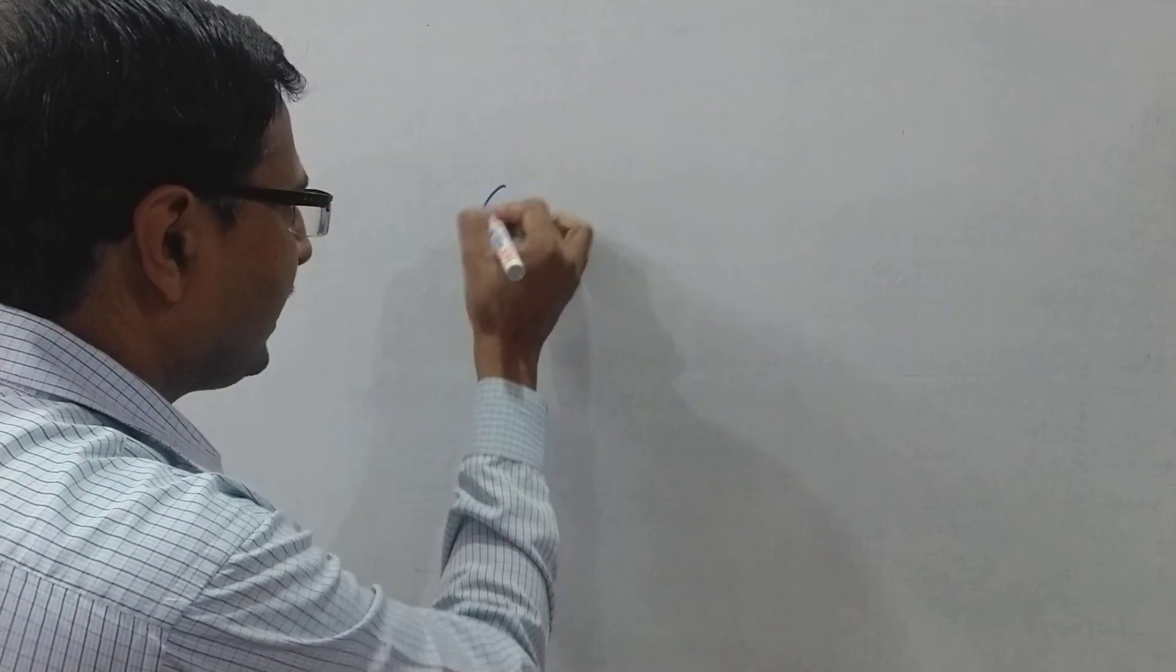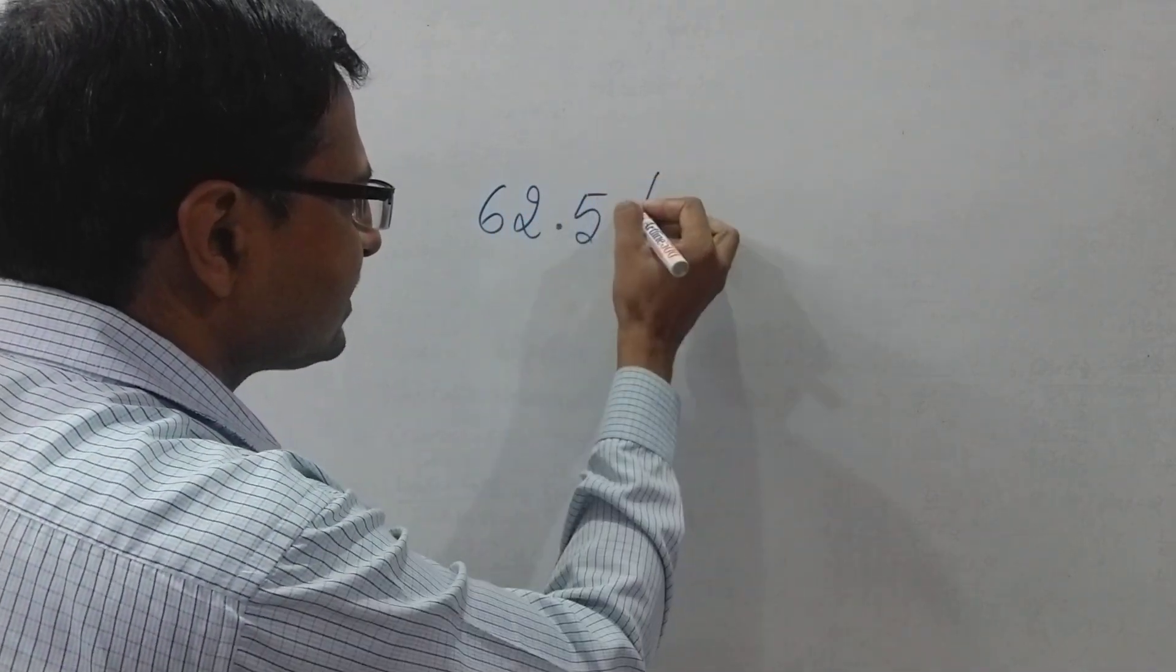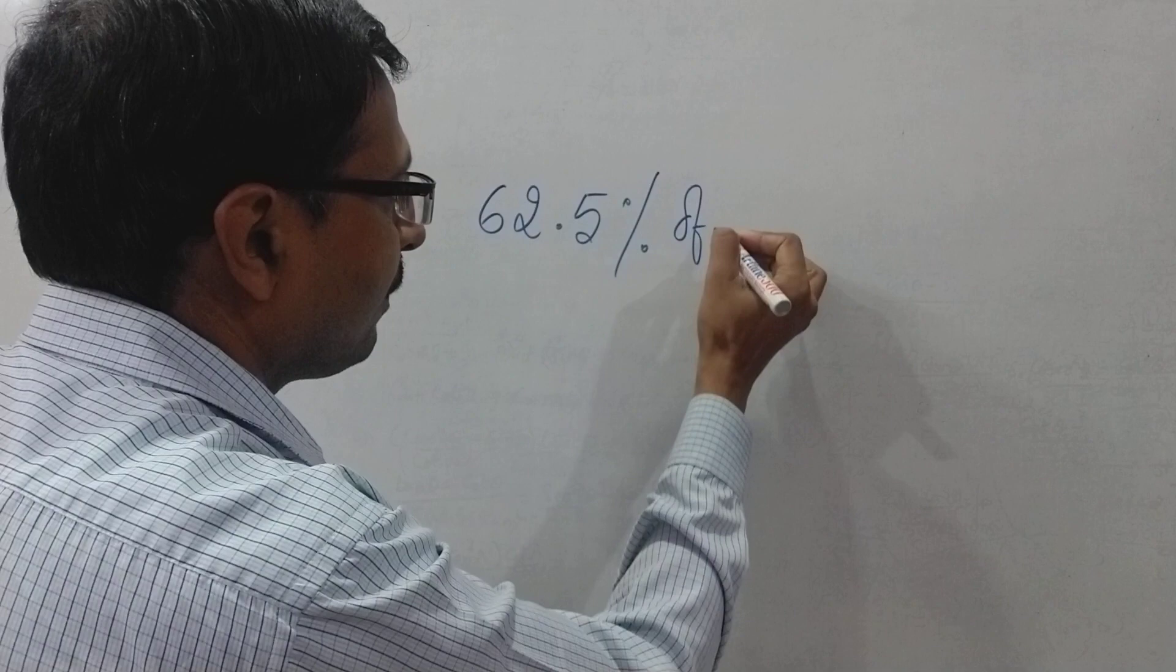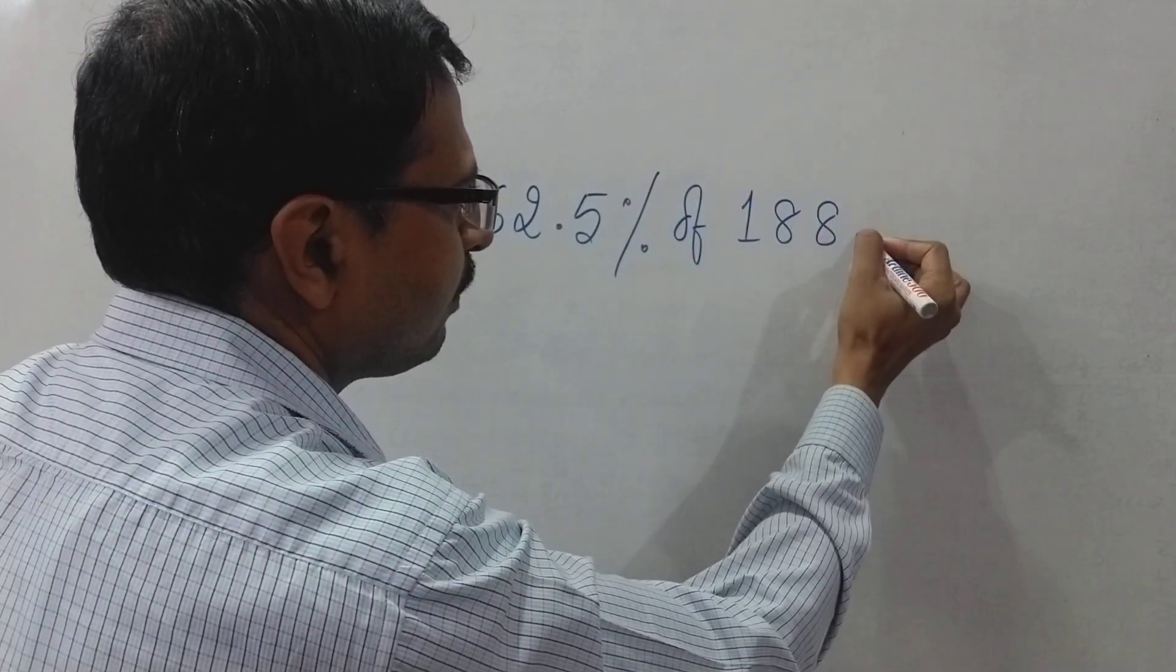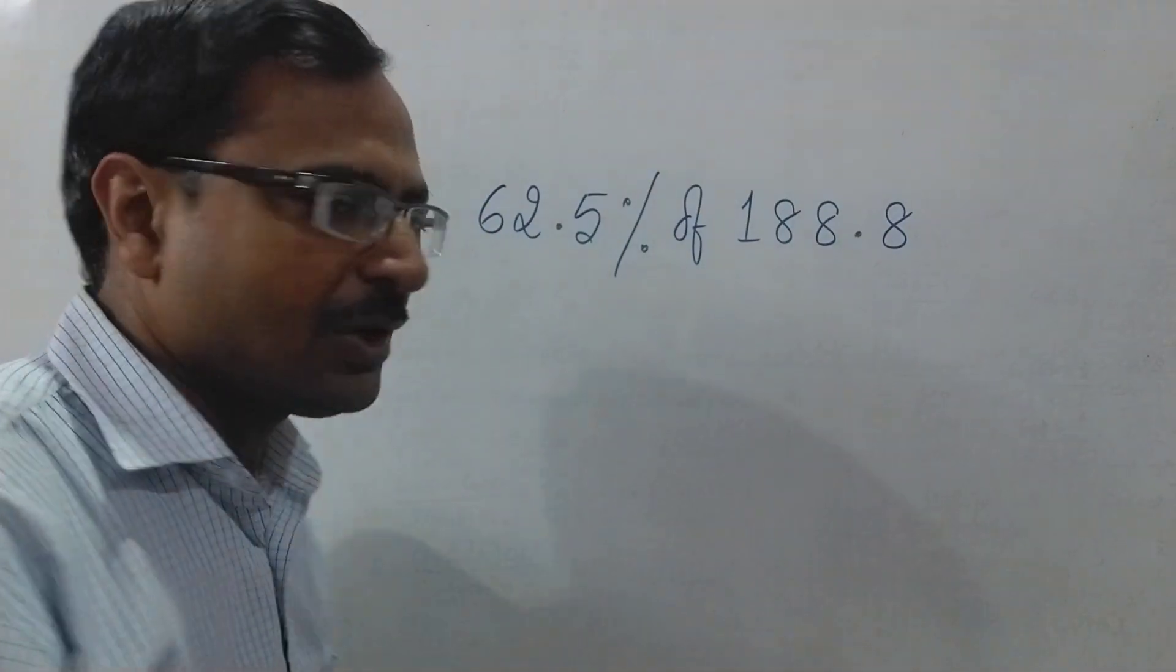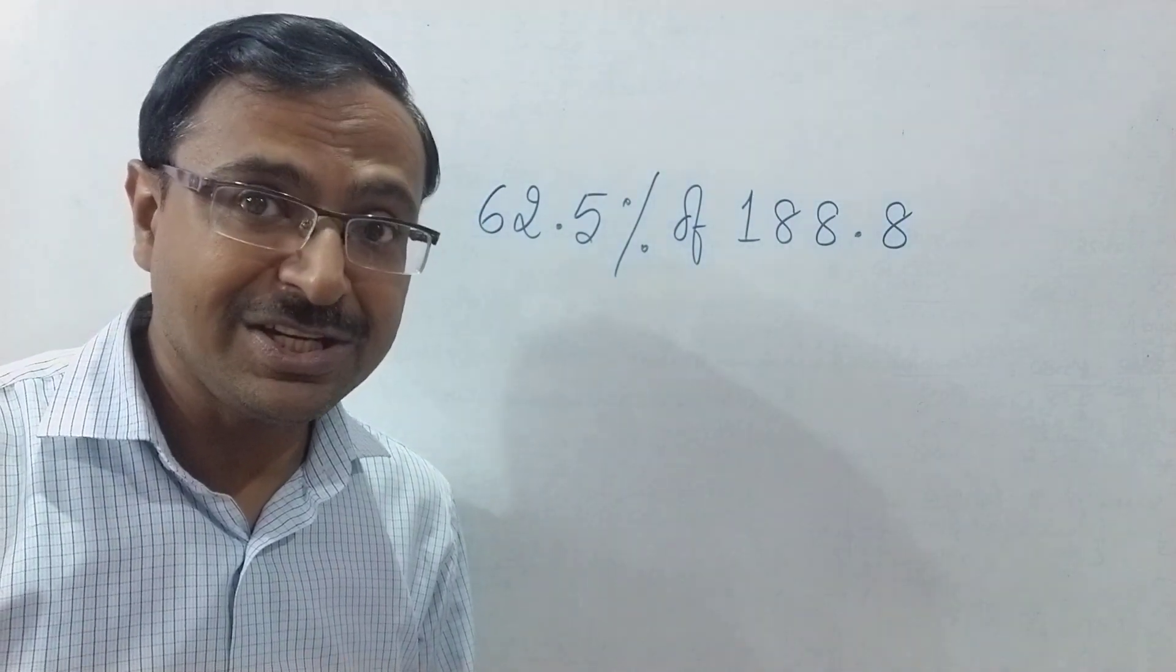...you will be able to solve this in hardly five to six seconds. Let's see the question first. The question is you have to find 62.5 percent of a complex number. Suppose we have 188.8. Now see the question: 62.5 percent of 188.8.